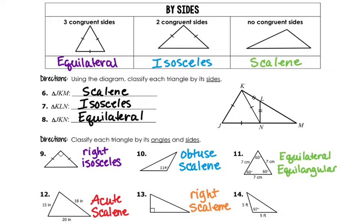And then the last one: 97 degrees is greater than 90, so it's obtuse. And we have a five-foot and a five-foot on the bottom, so that's two sides that are congruent. So it's an isosceles.